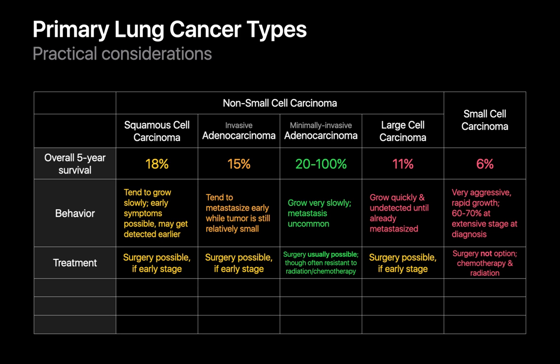Overall five-year survival of non-small cell lung cancers is around 21%, but survival rates vary widely depending on which kind a patient has. Five-year survival rates for minimally invasive adenocarcinomas can range from 20% to almost 100%, while five-year survival rates for large cell carcinomas are not much better than small cell lung cancers, because minimally invasive adenocarcinomas grow very slowly and metastasize infrequently, while large cell carcinomas grow quickly and are usually not detected until they've already metastasized. Knowing which bucket your patient's lung cancer is in has an important impact on prognosis and treatment options. With small cell lung carcinomas, surgical cures are usually not an option and patients are usually looking at chemotherapy and radiation, while surgical cures are usually a possible choice for minimally invasive adenocarcinomas. Therapies like radiation and chemotherapy may not be highly efficacious for minimally invasive adenocarcinomas.